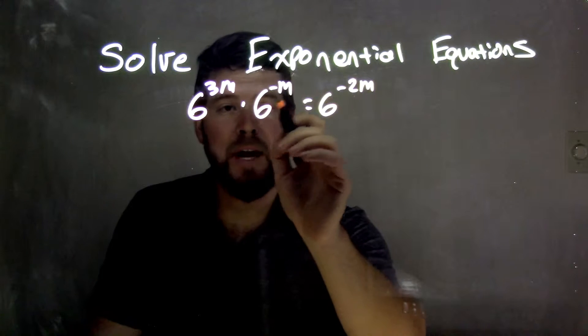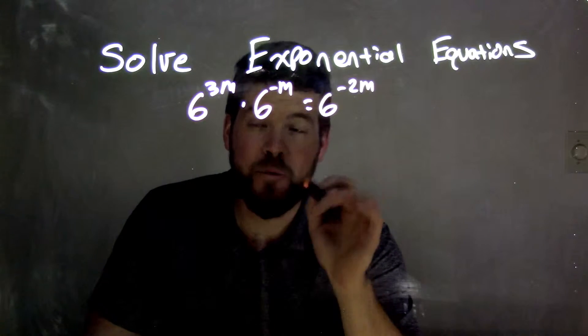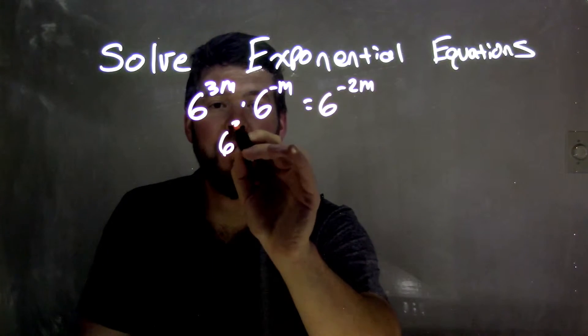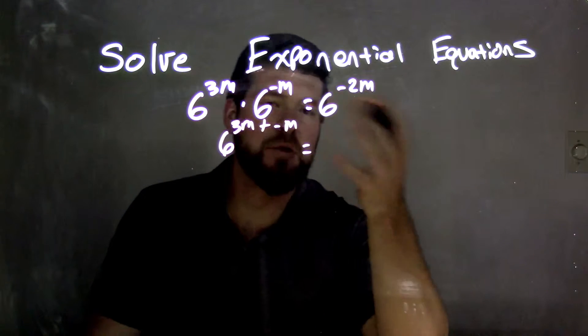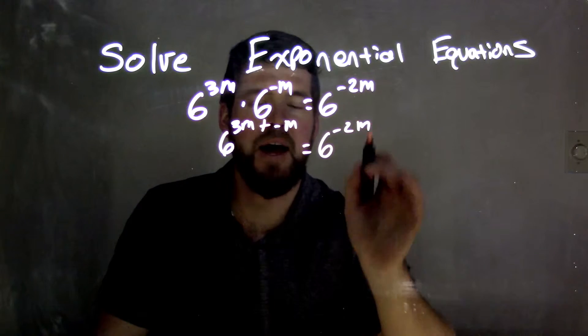So 6 to the 3m times 6 to the negative m can be rewritten as 6 to the 3m plus negative m, and that equals our right-hand side, which is 6 to the negative 2m.